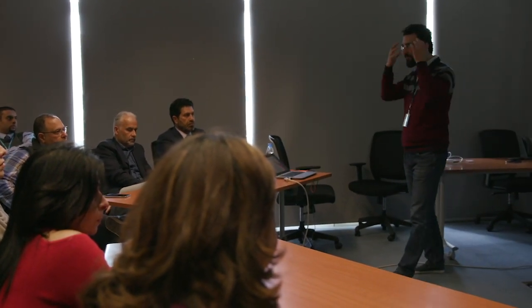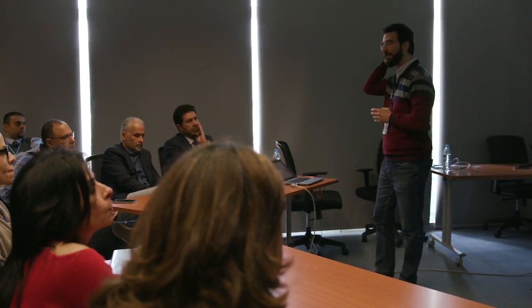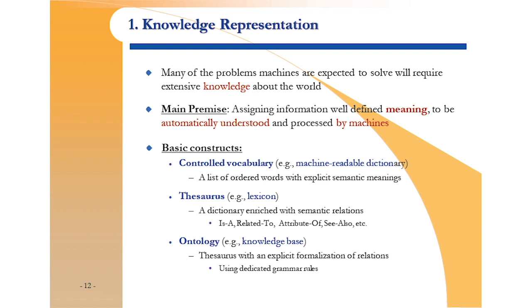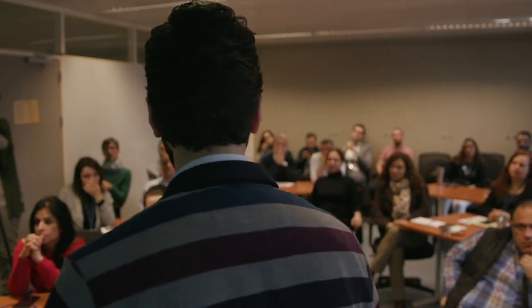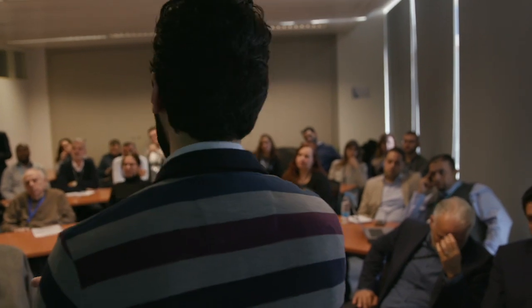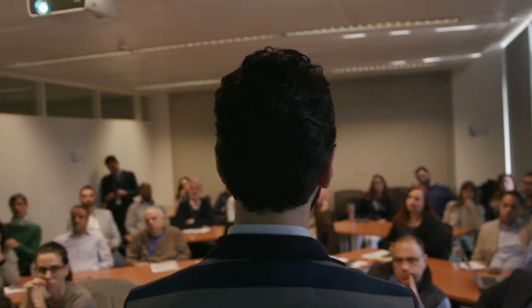Let's start with knowledge representation. When I speak with you in English, you understand because you know English — somewhere in your mind there's a mental dictionary. Whenever I say a word, you connect it with your own understanding of that word, just like looking up a definition in Webster's dictionary. If I want to communicate with a computer using English, it should have the same reference — some kind of dictionary it can use to process every word and connect meanings.